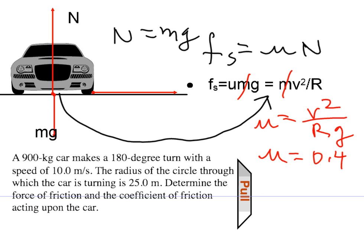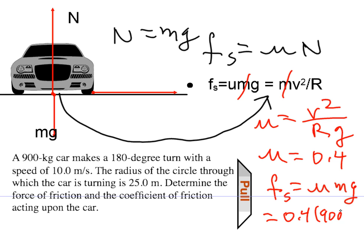Now, if the coefficient of friction is 0.4, what's the force of friction? The force of friction will be mu times the normal force, or mg. So that will equal 0.4 times 900 times 9.8, and so the force of friction will be 3600 newtons.